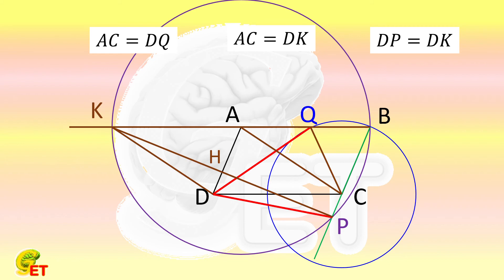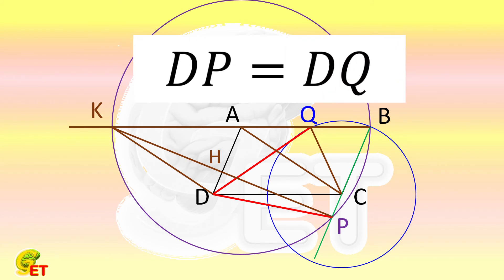From those three points, we conclude that the length of DP equals that of DQ. So we are done. Thank you for watching, and see you next time.